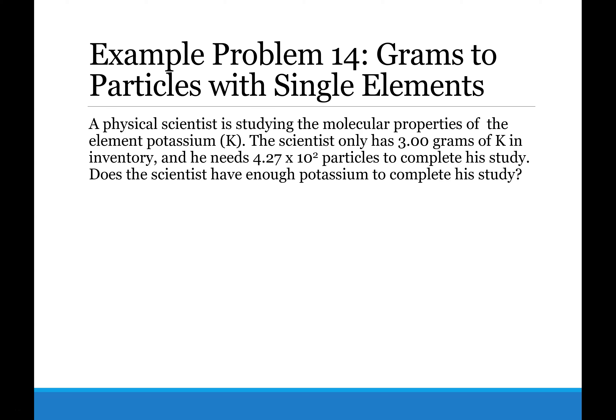Example problem 14 reads, a physical scientist is studying the molecular properties of the element potassium. The scientist only has 3 grams of potassium in inventory, and he needs 4.27 times 10 to the second particles to complete his study.